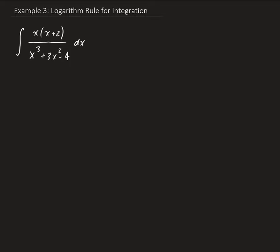In this example, we're going to take the integral of x multiplied by x plus 2, all divided by x cubed plus 3x squared minus 4. To start out with, we're going to let u be equal to the denominator.